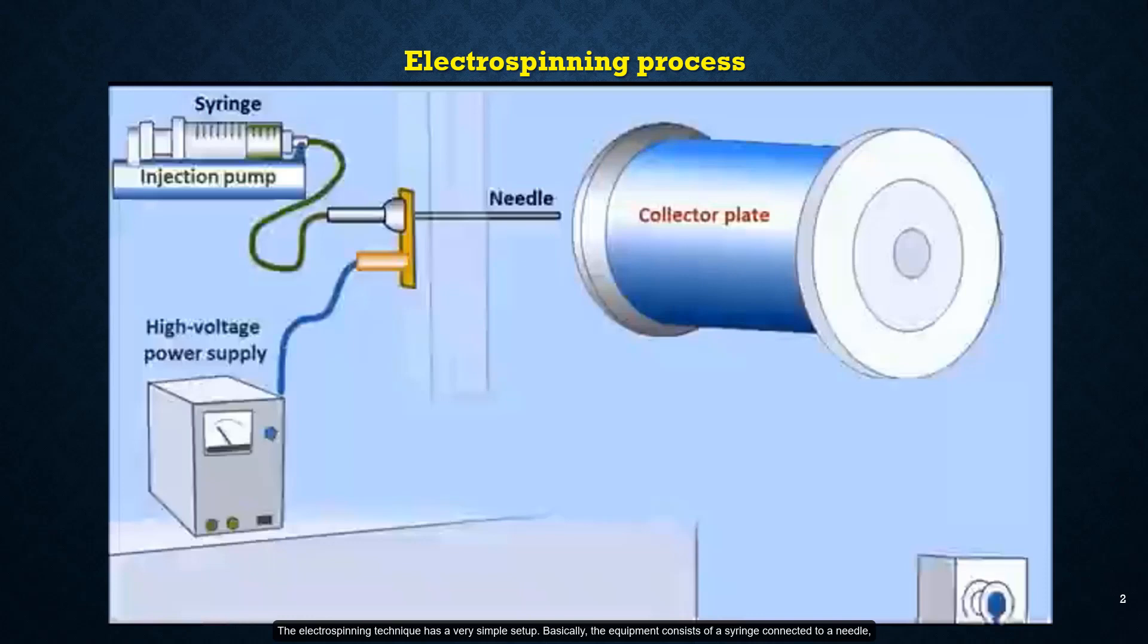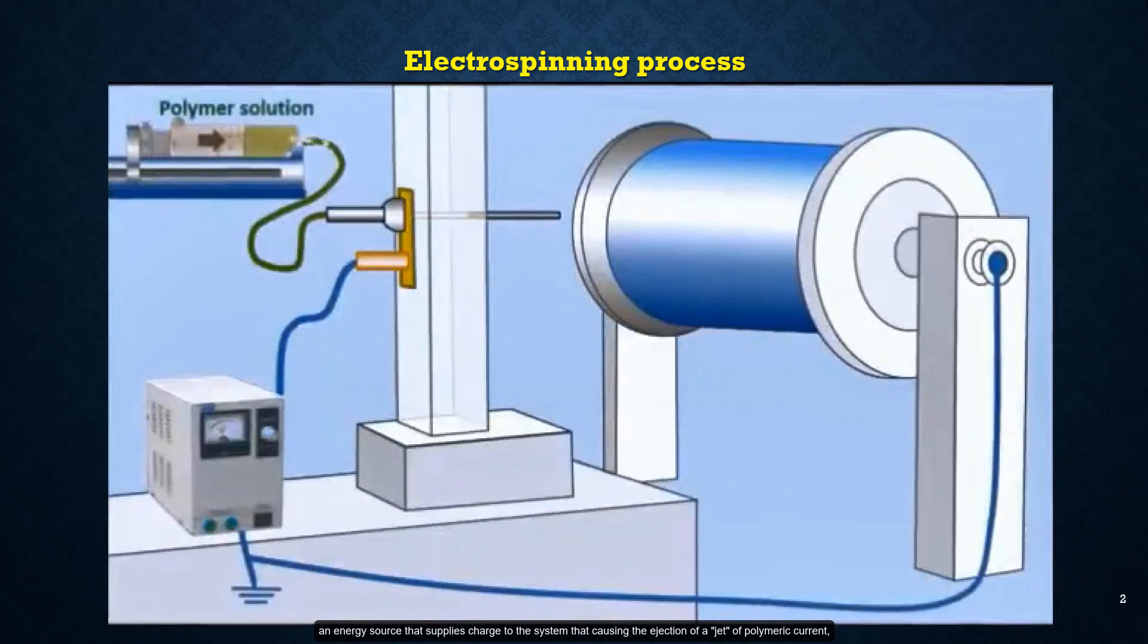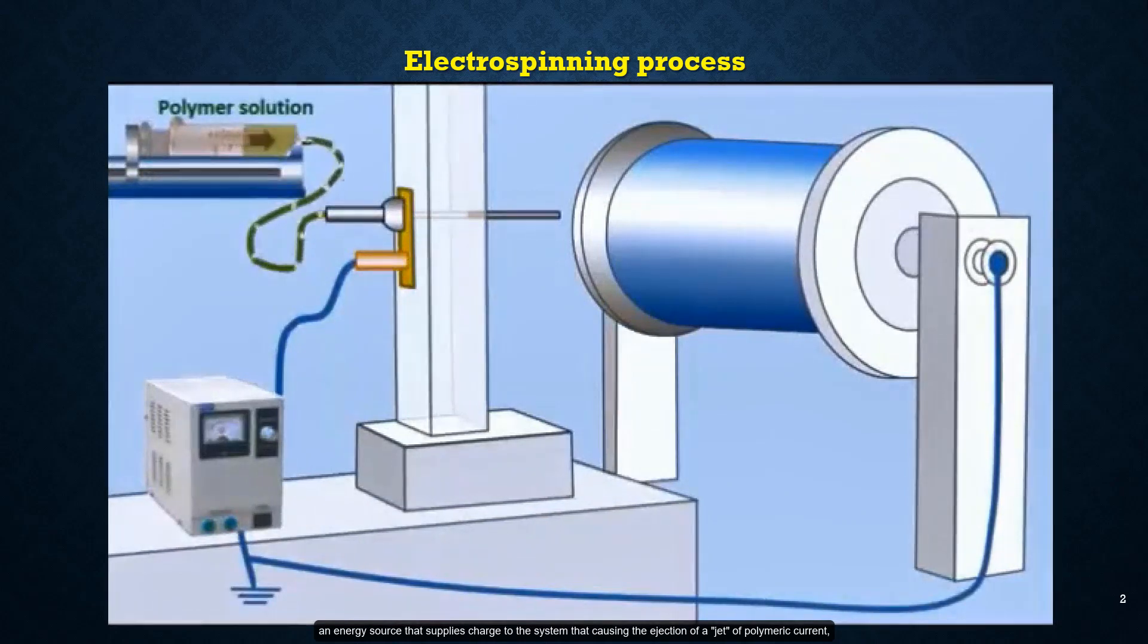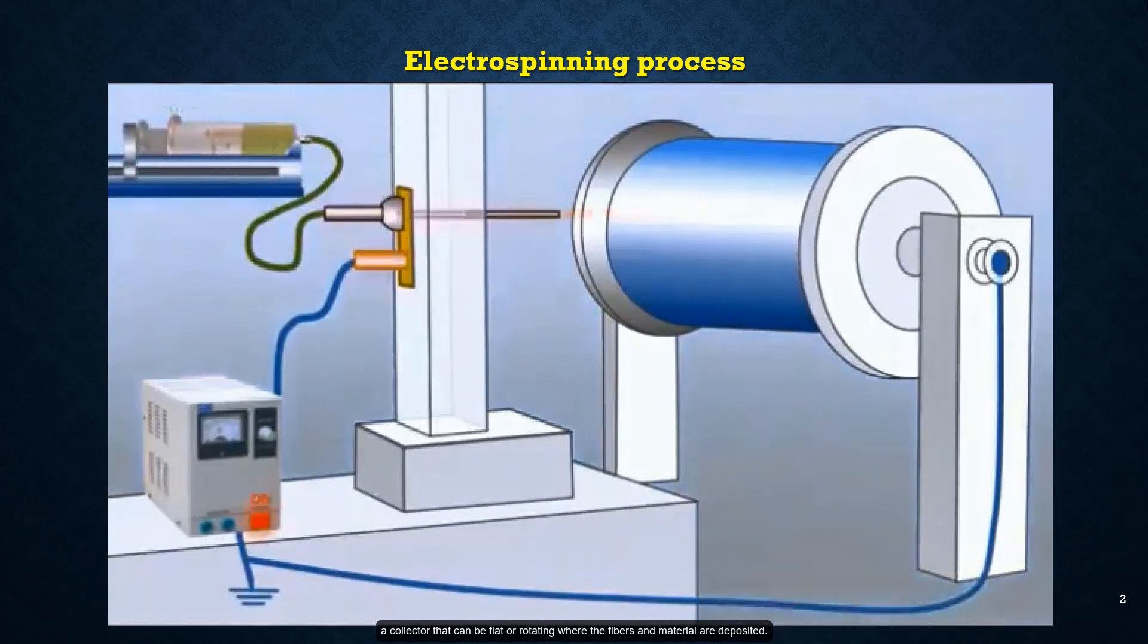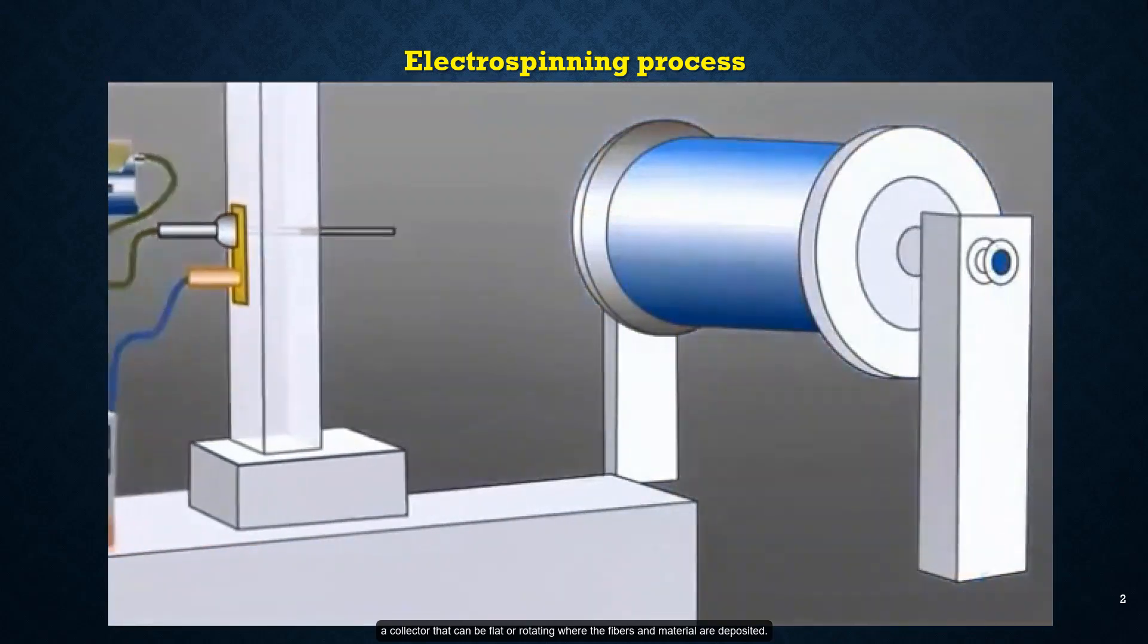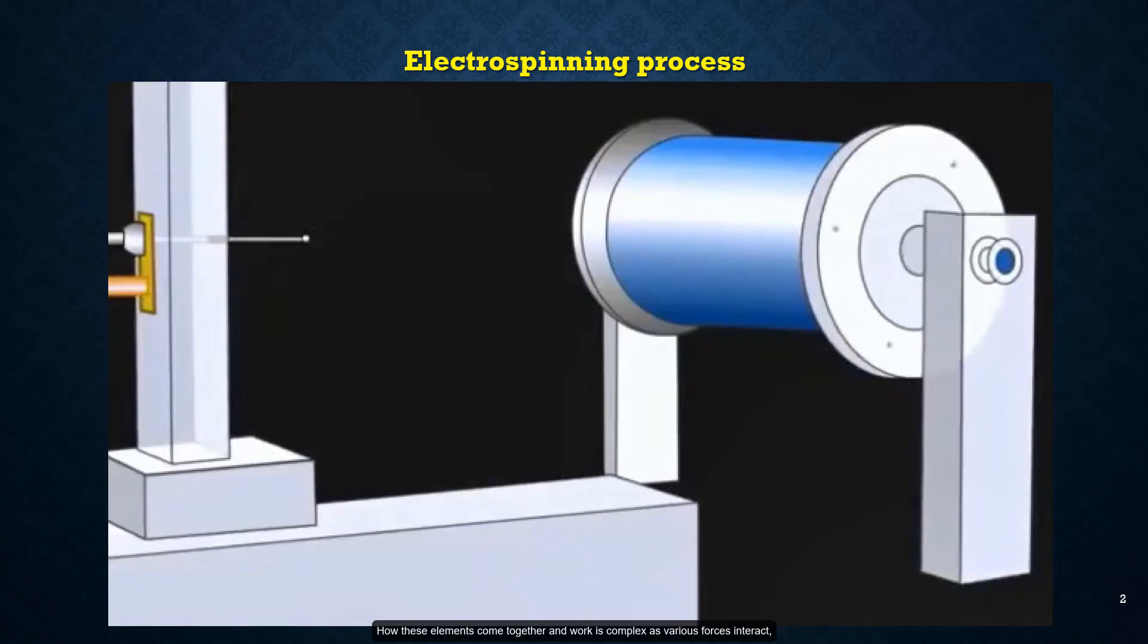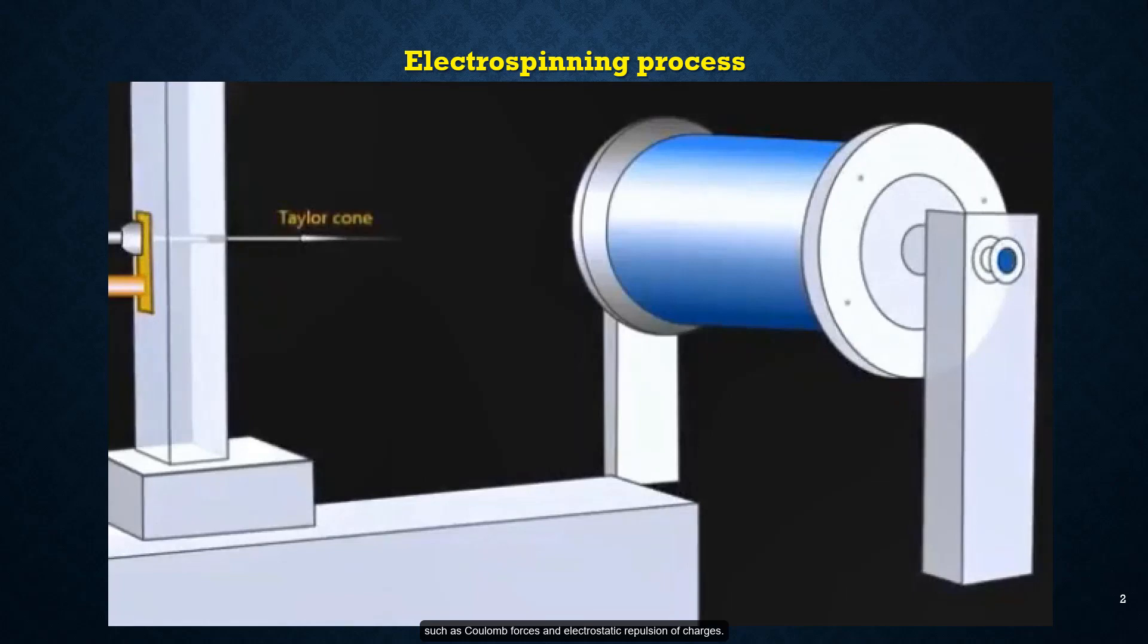The equipment consists of a syringe connected to a needle, an energy source that supplies charge to the system that causes the ejection of a jet of polymeric current, a collector that can be flat or rotating where the fibers and material are deposited. How these elements come together and various forces interact, such as Coulomb forces and electrostatic repulsion of charge.